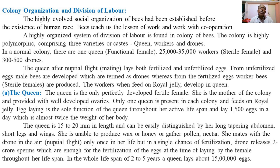Usually in a honeybee colony there is only one queen, 15,000 to 25,000 workers, and 300 to 500 drones in a single colony of every species. There is a well-defined division of labor: the queen, workers, and drones perform different types of work to maintain and regulate all activities, as all three castes have morphological and physiological adaptations suited to their particular functions.